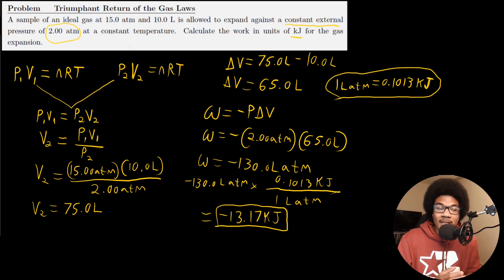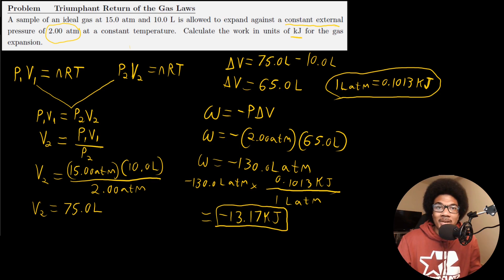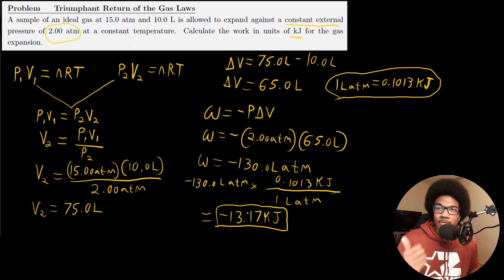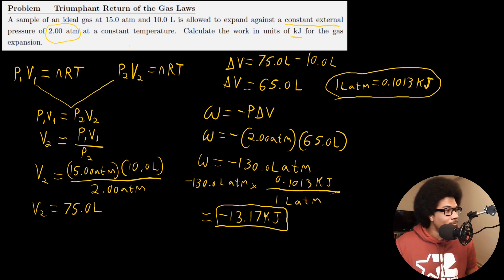We used the ideal gas law to solve for the final volume, which gave us everything needed to find the volume difference. Then we plugged into the PV work expression to get the final answer. It's important to keep your units straight and to know what information you can extract from the ideal gas law to help solve for energy transfer.